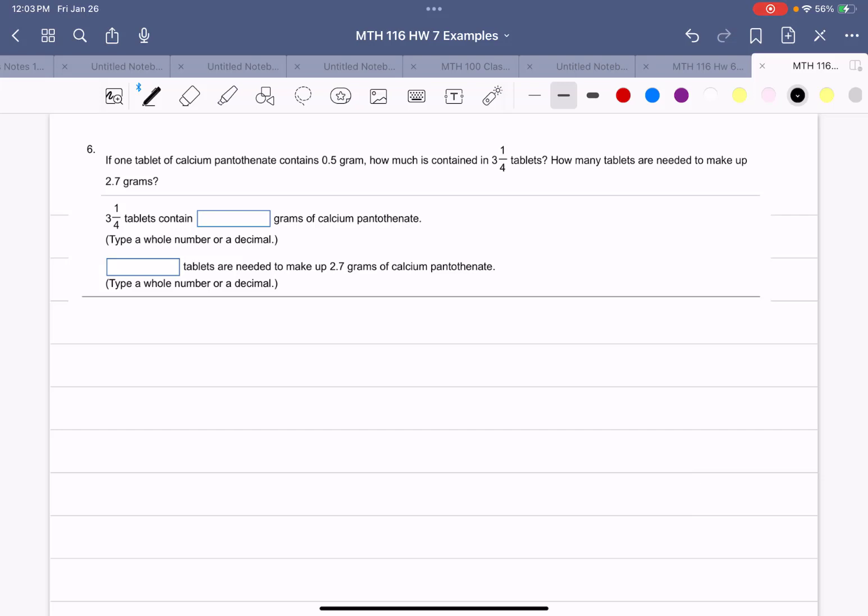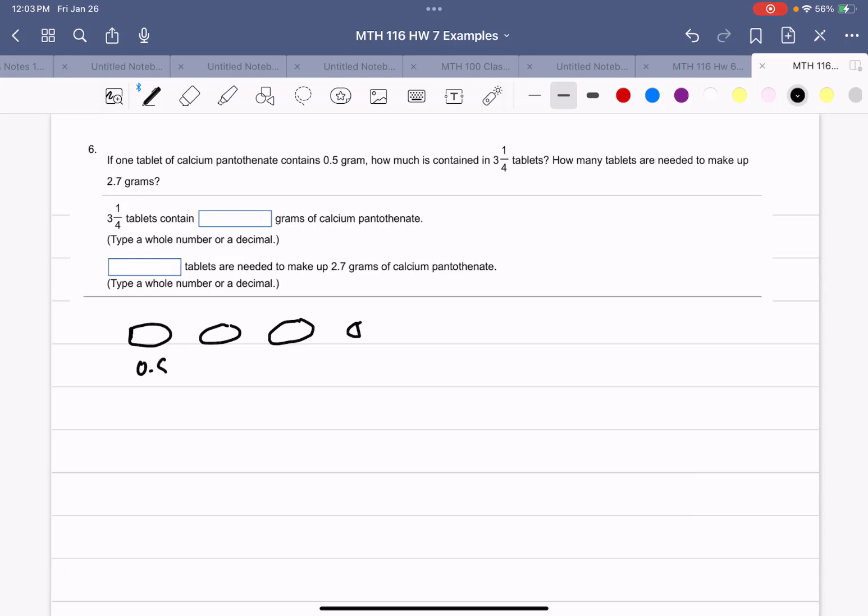So you've got tablet one, tablet two, tablet three, and a quarter. Each one of these is 0.5, 0.5, 0.5. But this one doesn't have the whole half because that's only a quarter.